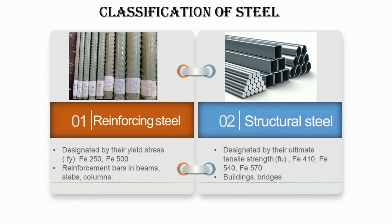Steel can be generally classified into reinforcing steel and structural steel. Reinforcing steel consists of the reinforcement bars used in RCC beams, slabs, or columns, and is designated by the yield stress Fy. Structural steel, denoted by its ultimate tensile strength Fu, is used in buildings or bridges — the kind seen at railway stations, overhead platforms, or overhead bridges.